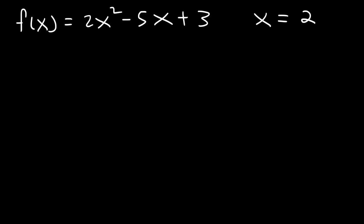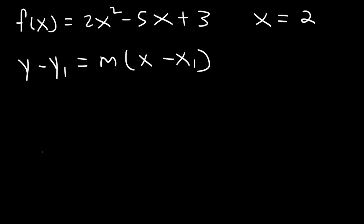So what equation should we use? We need to use the point slope form of a linear equation — that's the preferred form. You can also use the slope intercept form if you prefer. Now, we need to find two things. We already have x1; x1 is 2. We need to calculate y1, that is y when x is 2, and we need to determine the slope.